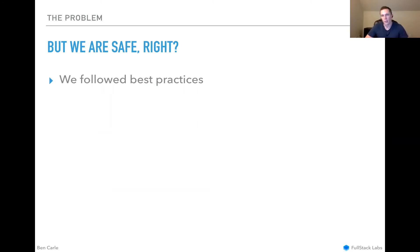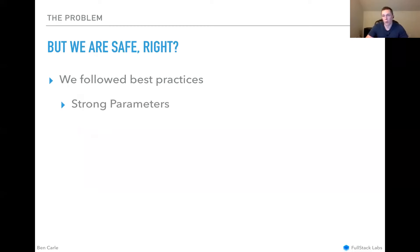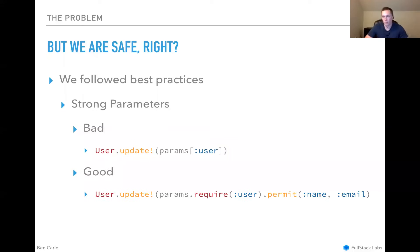We expected that we're safe — we followed best practices. We're in a secure server environment; in our case Heroku, so we can feel pretty good that the holes on the server are well protected. We also follow best practices for our application. We're using strong parameters for our REST API, so we're not dumping parameters into models without filtering. We use require and permit to restrict the data that comes through our API.